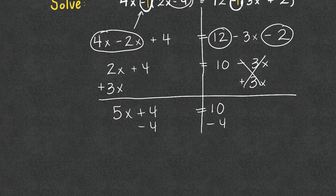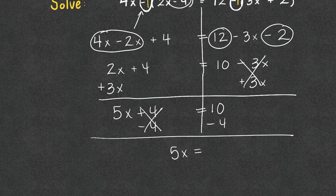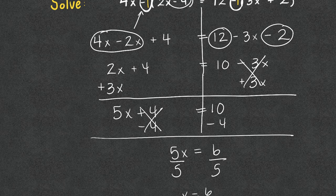Subtract 4 from both sides. The 4s cancel. We're left with 5x equals 6. Divide by 5, divide by 5, and we get x equals 6 fifths.